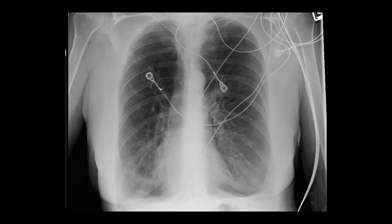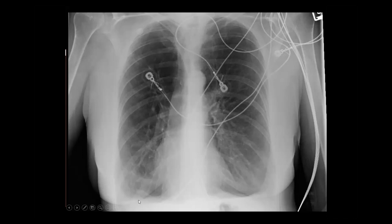In severe COPD exacerbation, you realize that this pressure put on the diaphragm makes it less effective in ventilation. In addition to airway obstruction, the disadvantaged position of the diaphragm is partly the cause of the hypercapnia.